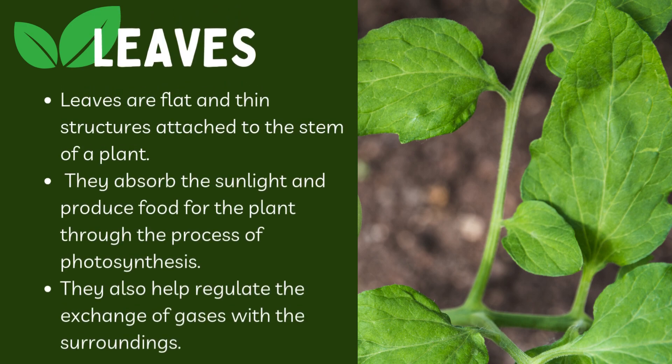Next part of the plant is leaves. Leaves are flat, thin structures attached to the stem of the plant. They absorb sunlight and produce food for the plant through the process of photosynthesis. They also help regulate the exchange of gases with the surrounding environment.